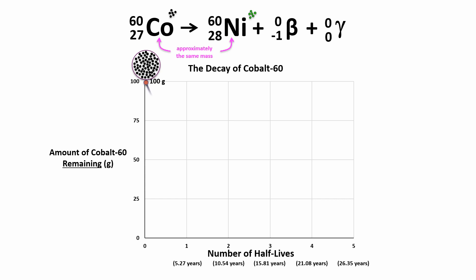So as I said, after one half-life, what started as 100 grams of cobalt-60 is now 50 grams of cobalt-60, since half of the cobalt-60 atoms have decayed into nickel-60 atoms.